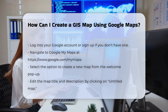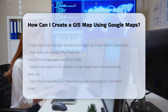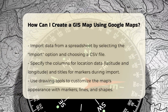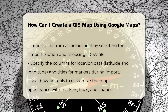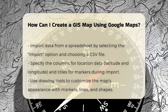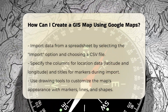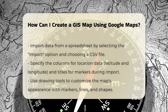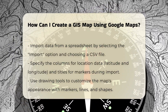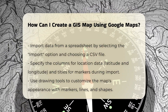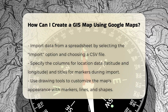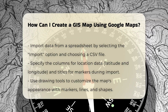Import your data. You can add data to your map in several ways. One common method is by importing data from a spreadsheet. Click on the 'Import' option and select your CSV file. Google will prompt you to select the column containing the location data, such as latitude and longitude, and the column to use as the title for your markers.